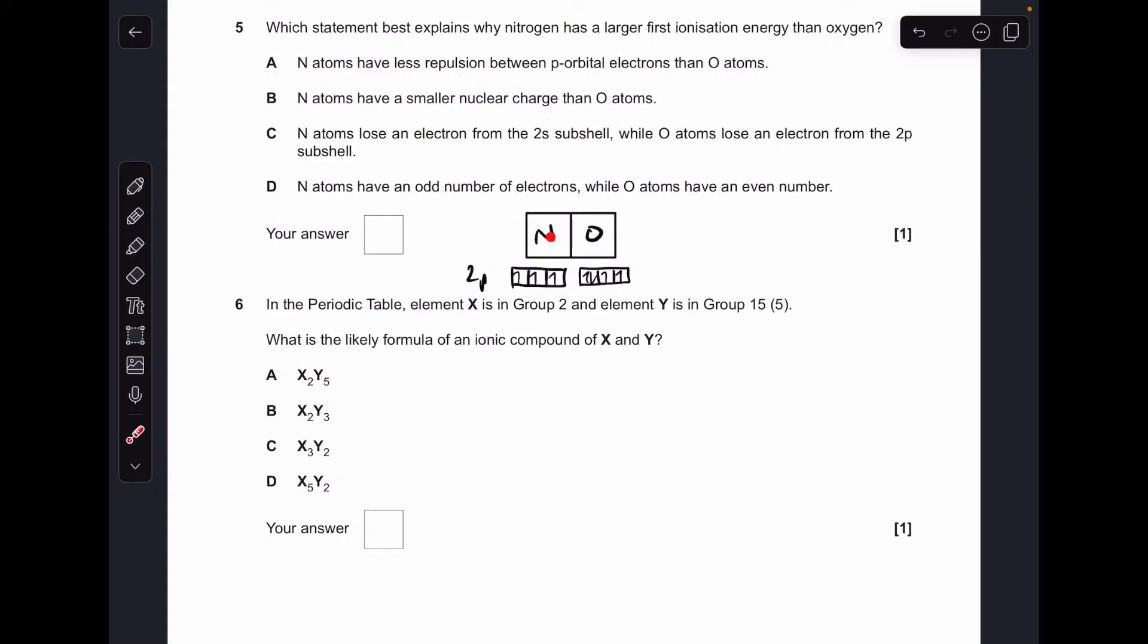Moving on to number 5. So we've got nitrogen and oxygen right next to each other in the periodic table. Their highest energy electrons are in the 2p subshell. So the arrangement for nitrogen looks like that, p3. And for oxygen it's p4. So if you remember, oxygen has this pair of electrons in the 2p orbital. They experience more repulsion. And so it's slightly easier to remove the electron. So the ionisation energy for oxygen is a little bit lower than nitrogens. So A is the reason from the list. Nitrogen atoms have less repulsion between p-orbital electrons than oxygen atoms.